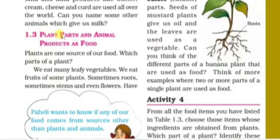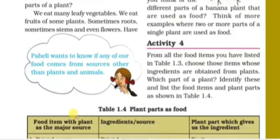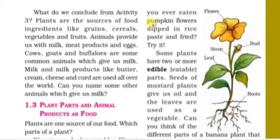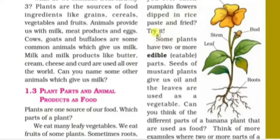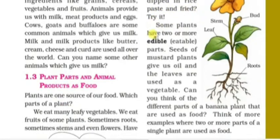Plants are one source of our food — but which part of the plant? We eat many leafy vegetables. We eat fruits of some plants. Sometimes we eat roots, sometimes stems, and even flowers. Have you ever eaten pumpkin flowers dipped in rice paste and fried? Try it!